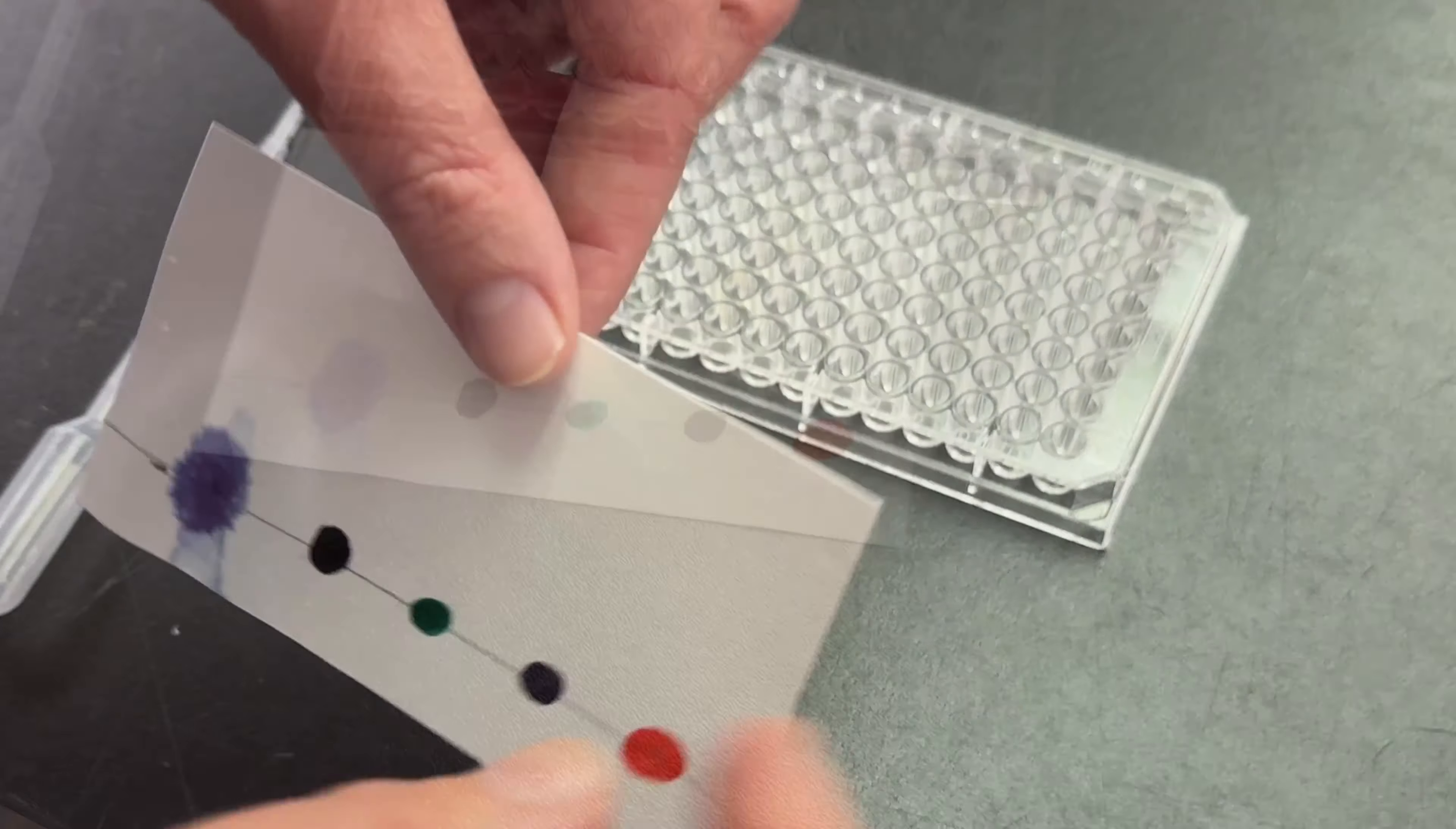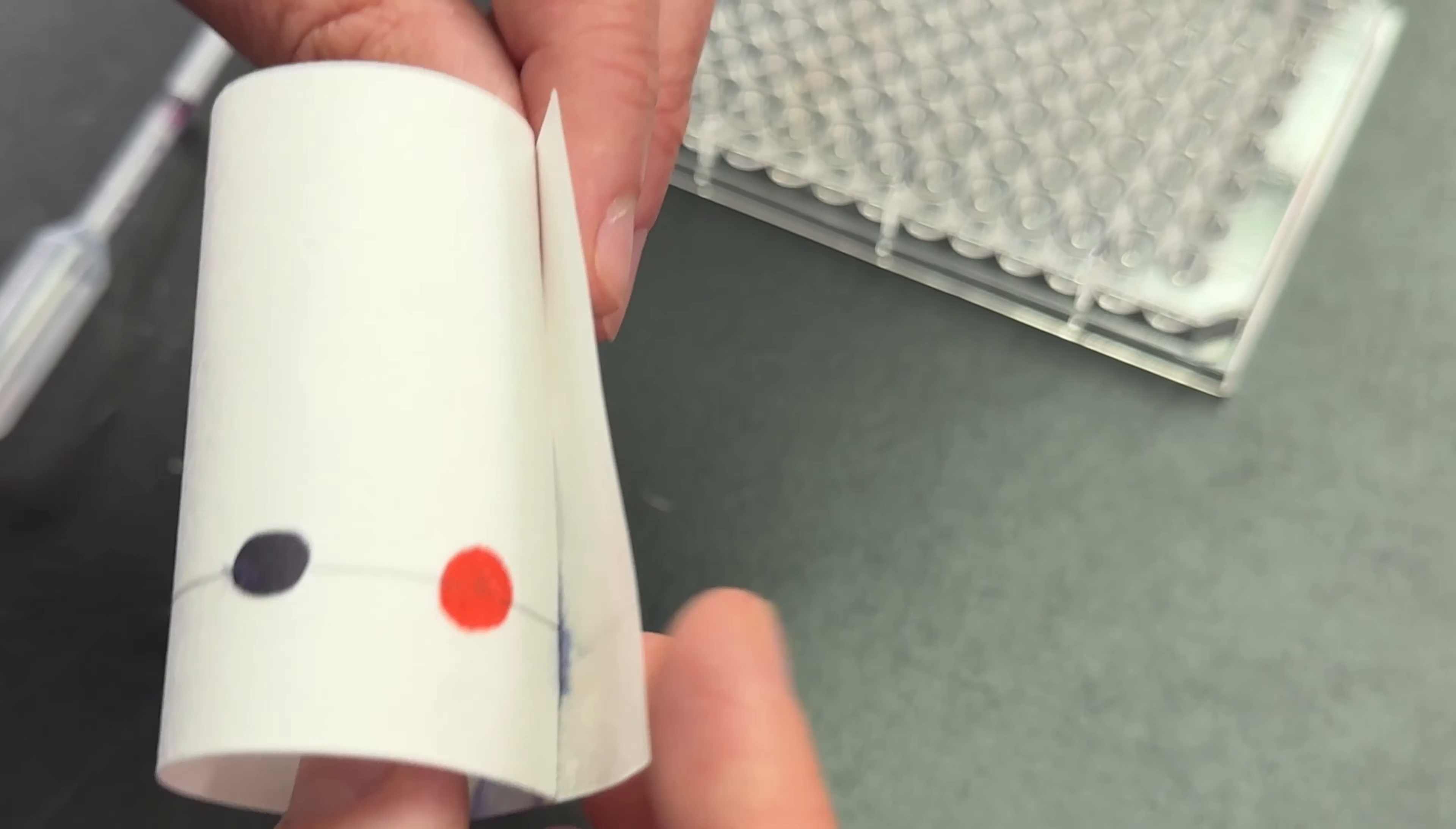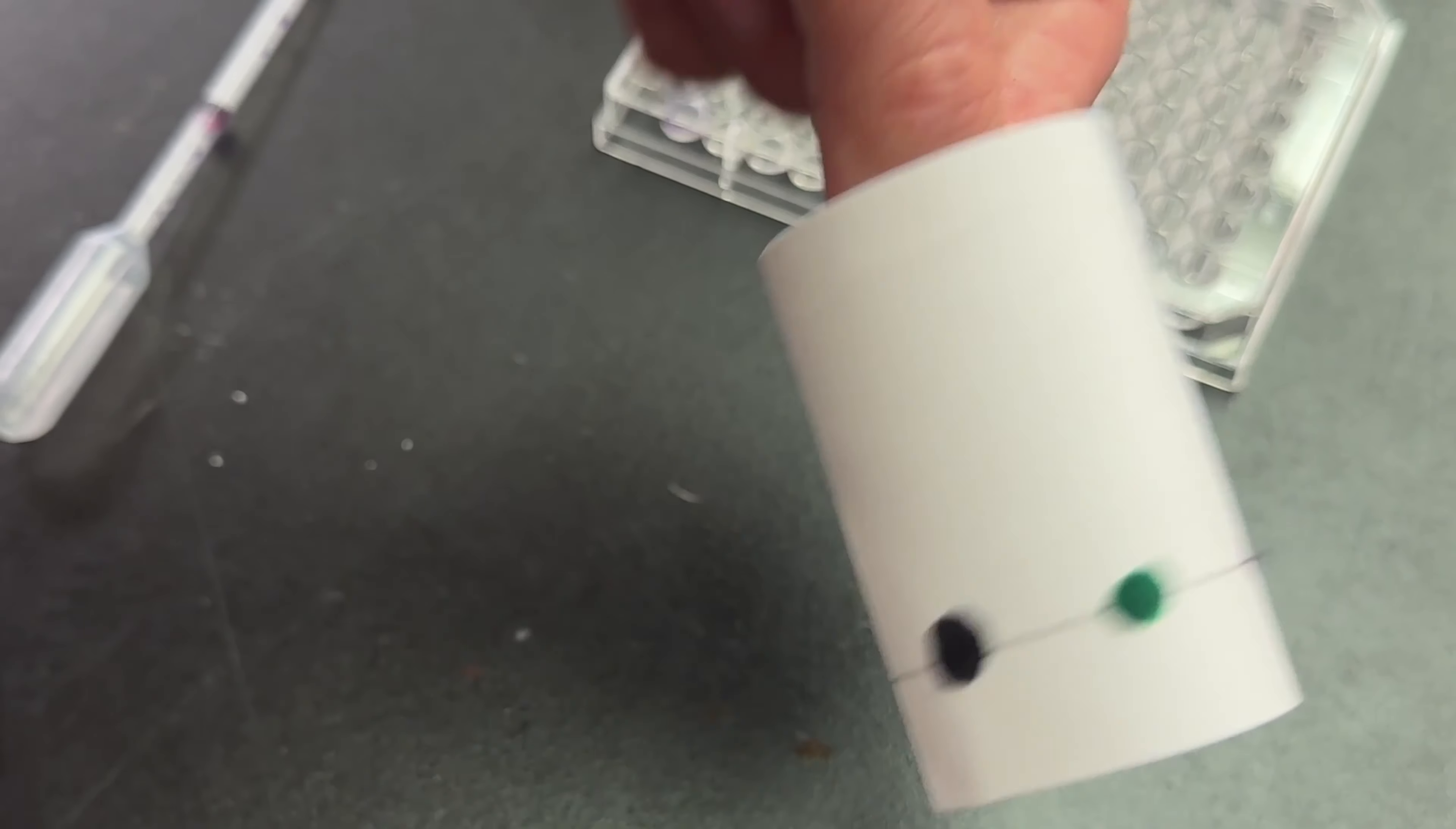Step five: when the paper is dry, roll it into a cylinder and fasten the edges together with staples or a small piece of tape.